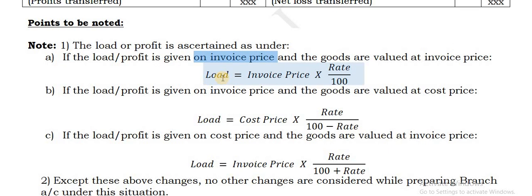If it is given on invoice price or on sale price, you always calculate the load as rate by 100 directly - do not add up the percentage in the denominator. Just rate by 100 as it is. So load will be equal to invoice price into rate by 100.